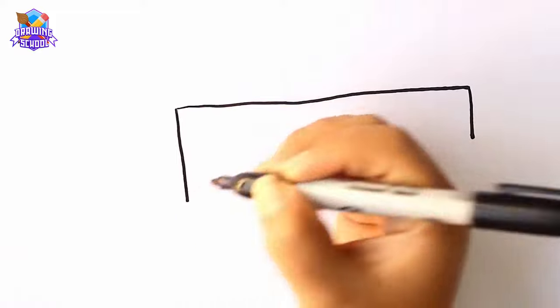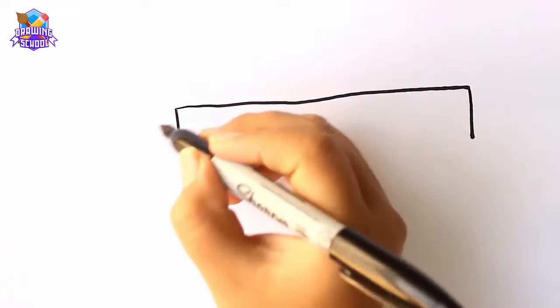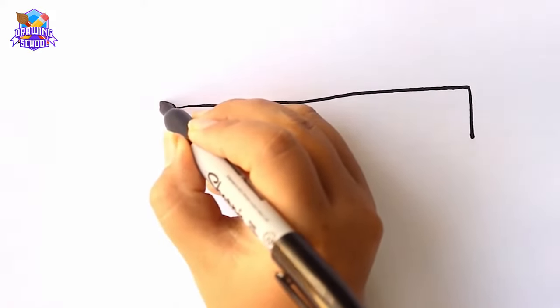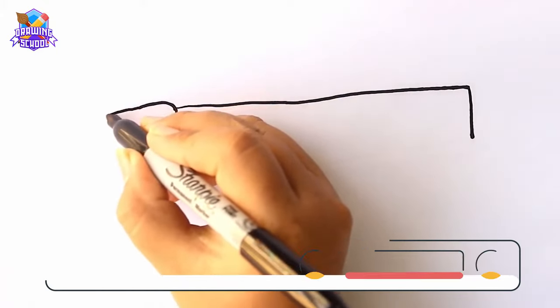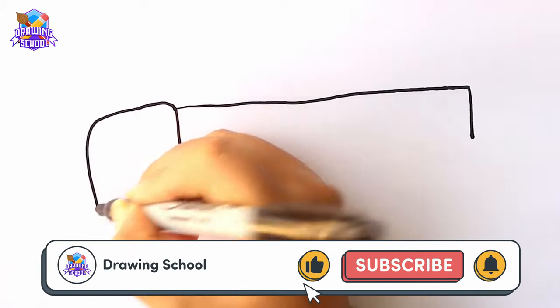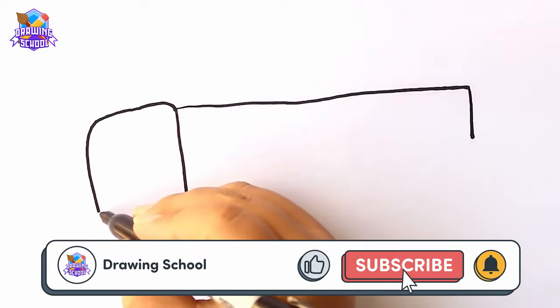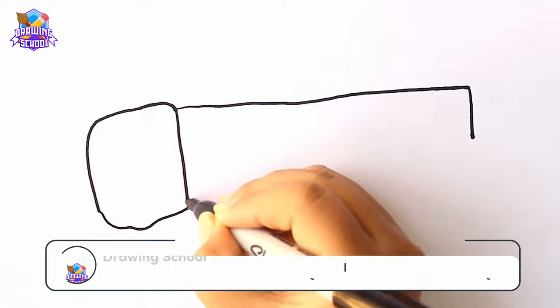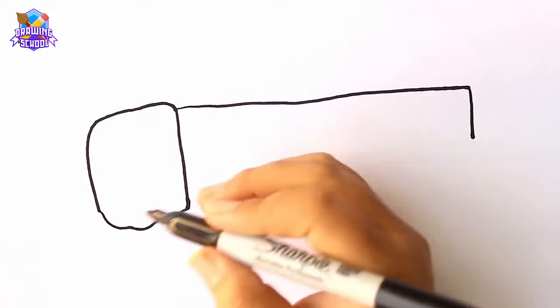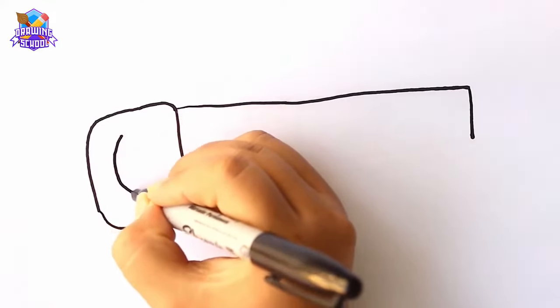And now we're going to draw the handle. We draw a kind of rectangle but round in the edges, and an oval in the middle.